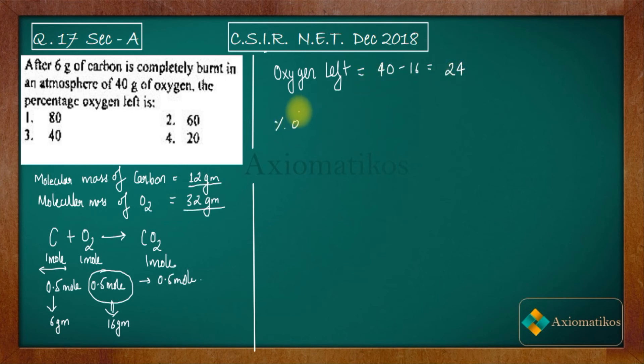Now let us find out the percentage of 24 grams in 40. So percentage of oxygen left will be 24 by 40 into 100. So what you are getting is 60%. So 60% of oxygen will be left after burning the 6 grams of carbon. I hope you get this.